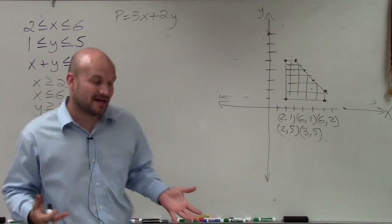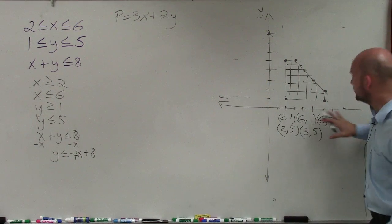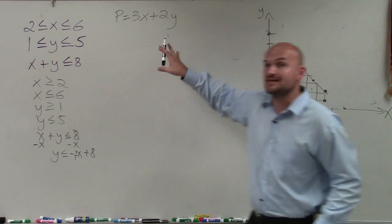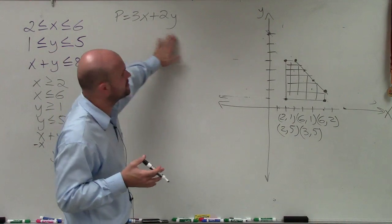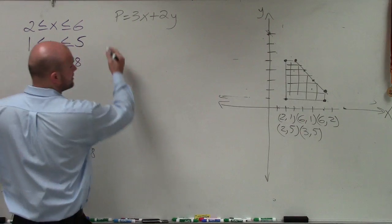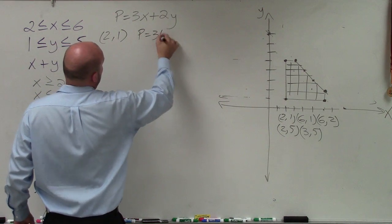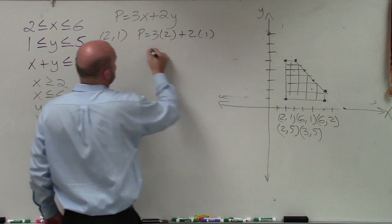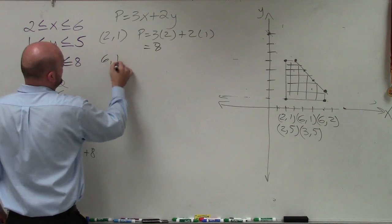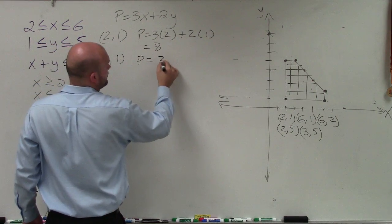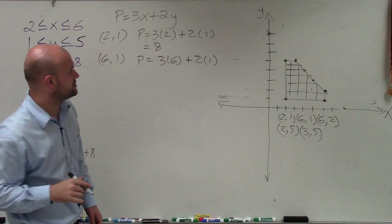Now to determine the maximum, I'm going to go back to my objective function p equals 3x plus 2y, and plug in those points for x and y to find the maximum. For (2, 1): p equals 3 times 2 plus 2 times 1, which is 6 plus 2, equals 8. For (6, 1): p equals 3 times 6 plus 2 times 1, which is 18 plus 2, equals 20.